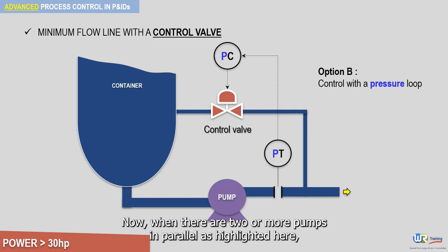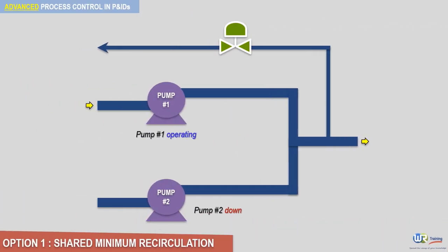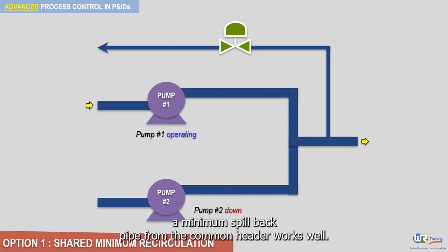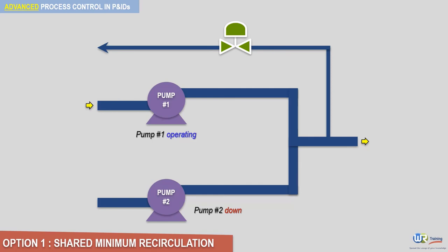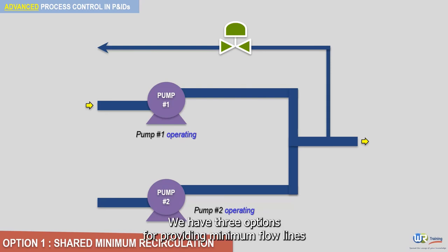When there are two or more pumps in parallel, and only one of them is operating and the rest are spares, a minimum spillback pipe from the common header works well. The question is what the minimum flow should be when there are parallel operating pumps.